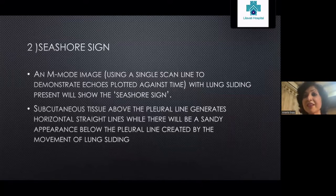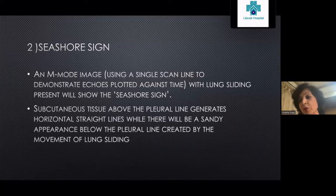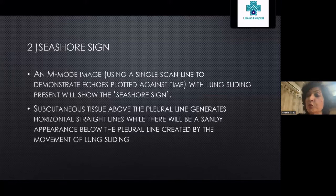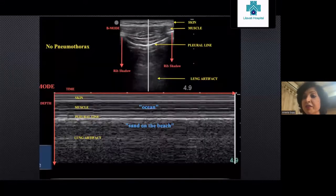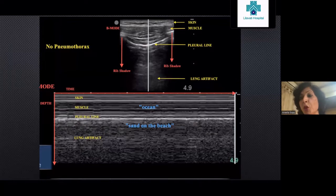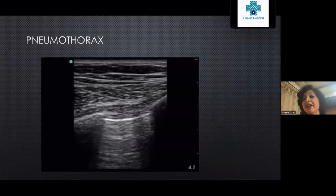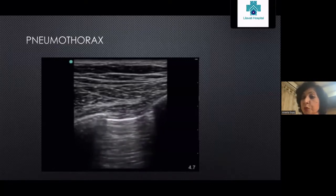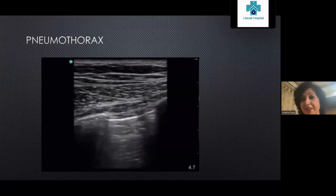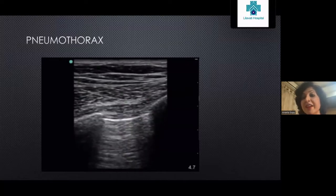The second sign is the seashore sign, which is the same lung sliding plotted on M-mode. The subcutaneous tissue above the pleural line generates horizontal lines because there's no movement, while movement of the lung creates a sandy appearance below the pleural line — giving us the seashore sign. In pneumothorax, air at the pleural interface prevents visualization of lung sliding, so the sliding sign is absent.